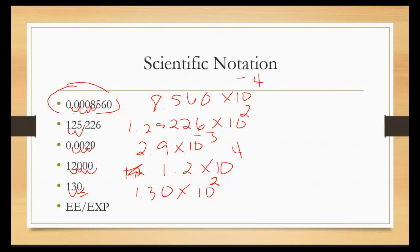To take it out of scientific notation, you're going to do the exact opposite. So if it's negative, you're going to move the decimal to the left. If it's positive, you're going to move the decimal to the right. And that tells you how many places to move the decimal.